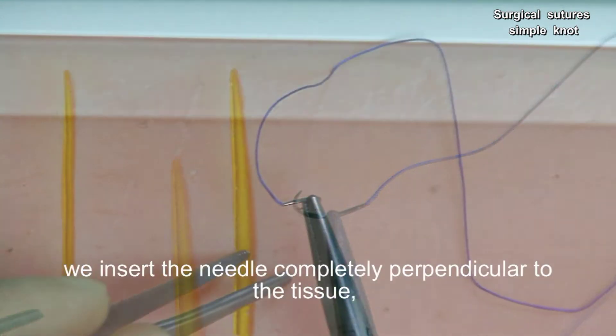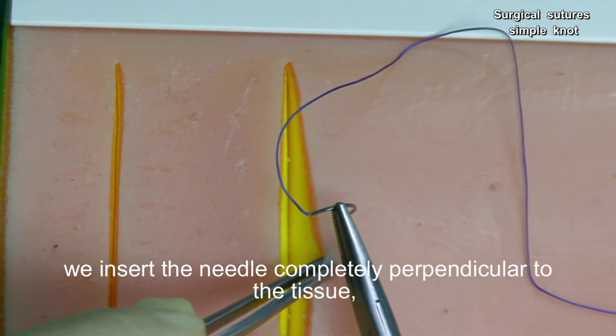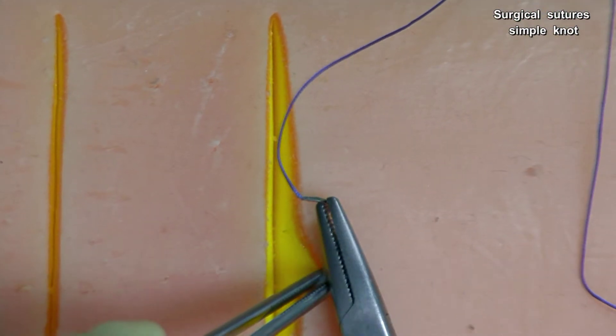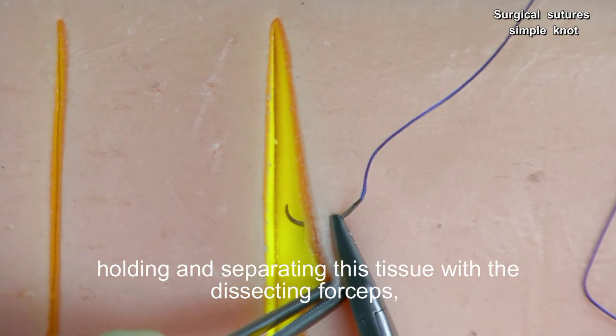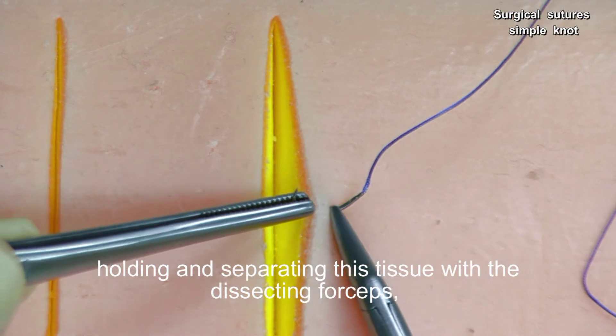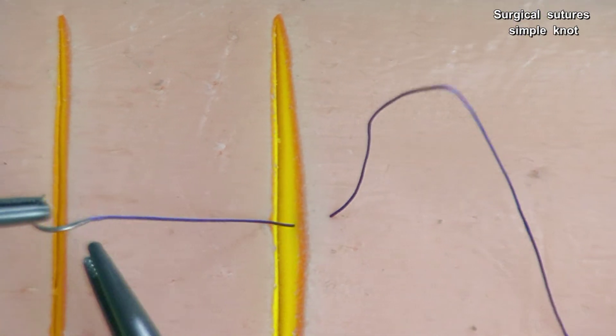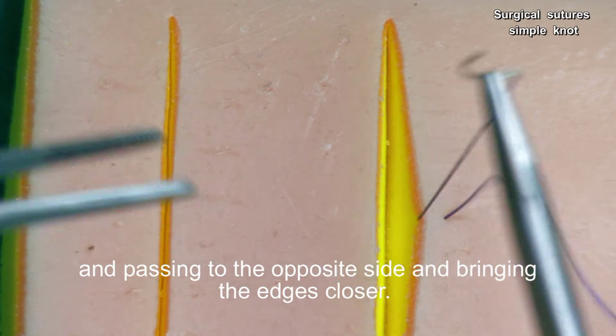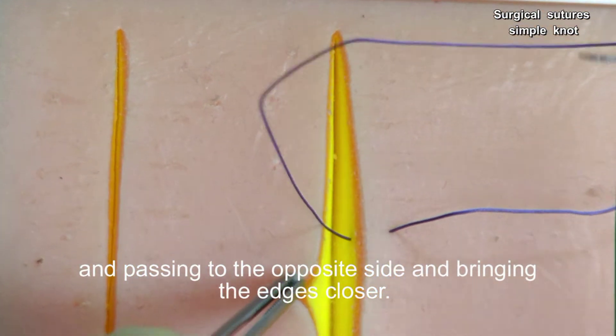To make this stitch, we insert the needle completely perpendicular to the tissue, holding and separating this tissue with dissection forceps and passing to the opposite side and bringing the edges closer.